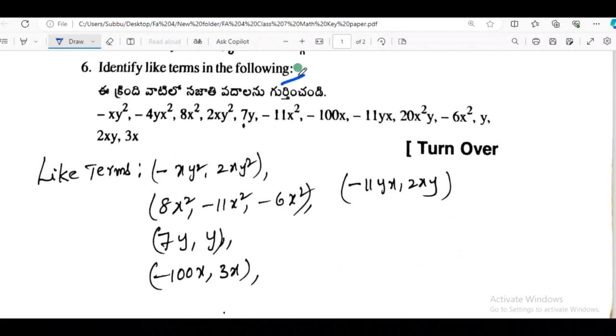Next, second one. Identify the like terms in the following. We will add like terms. So the like terms are xy squared plus xy squared equals 2xy squared.